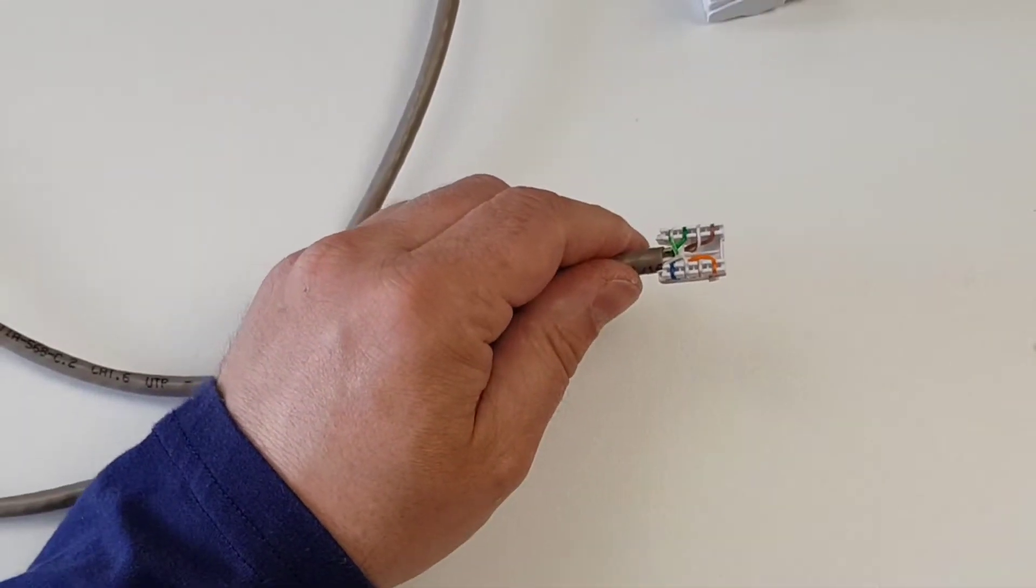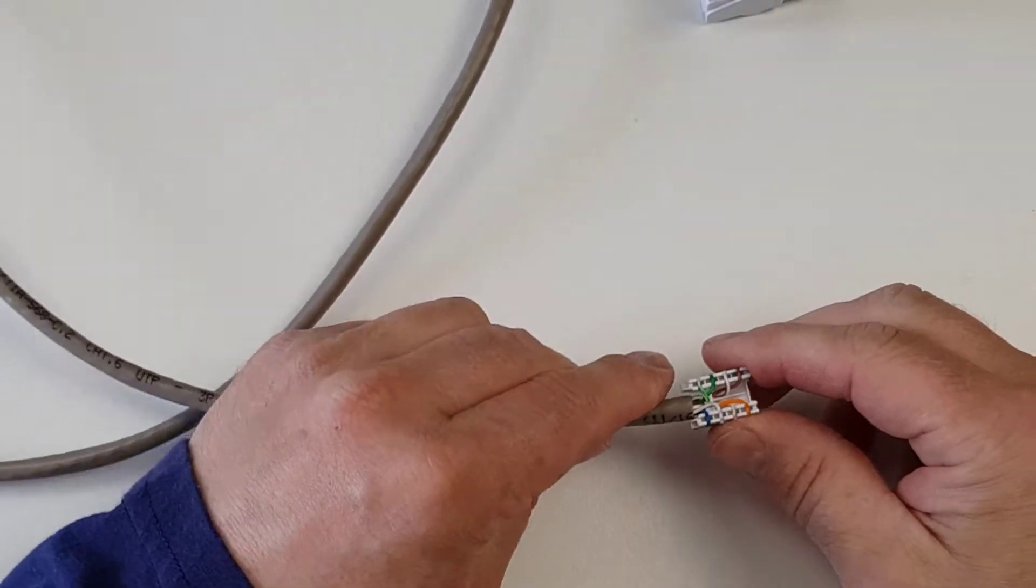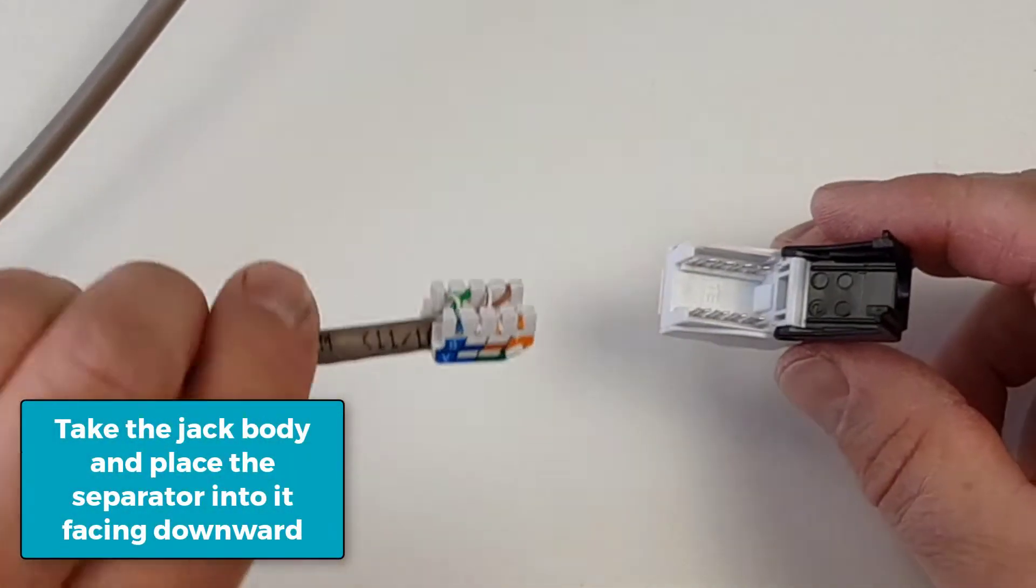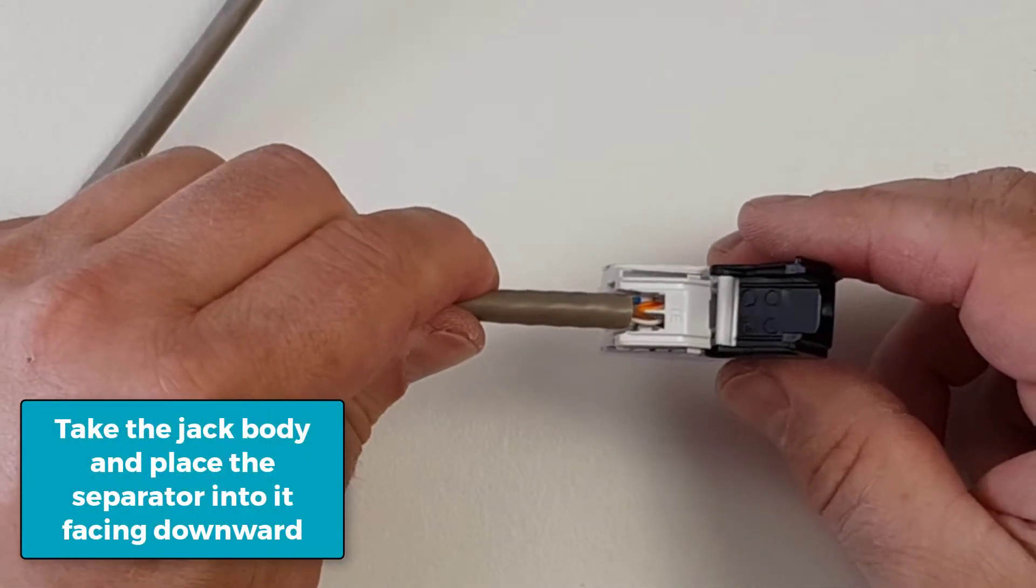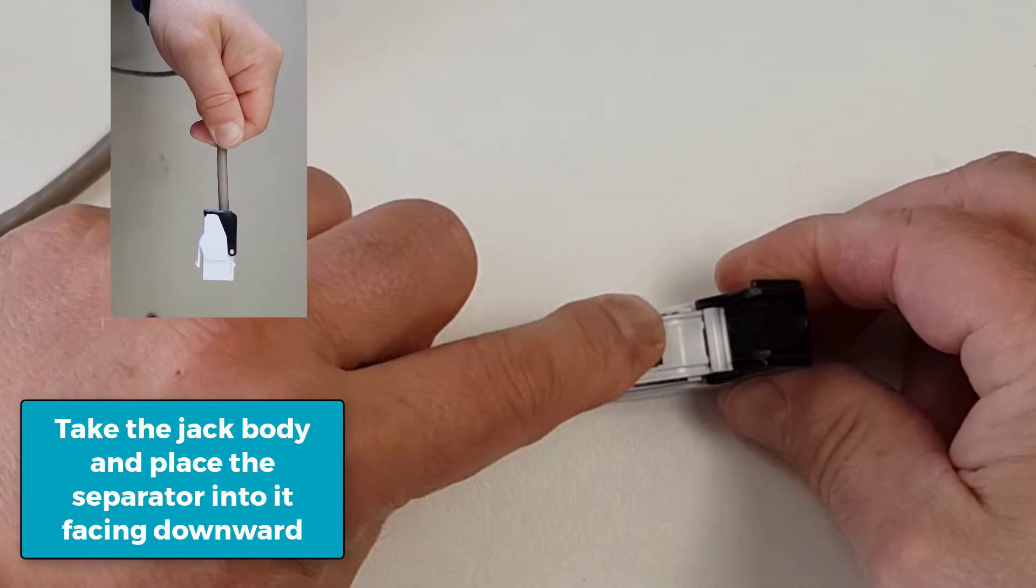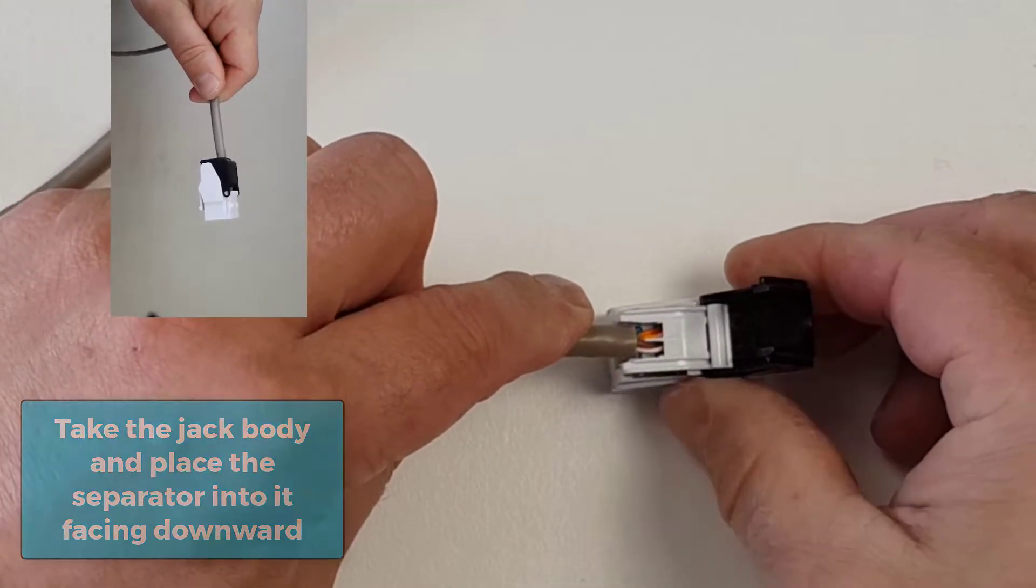Okay so that is now ready to place inside the jack. I take the jack, open it up, turn this upside down and just place it in gently so that it seats itself onto the insulation displacement terminals.